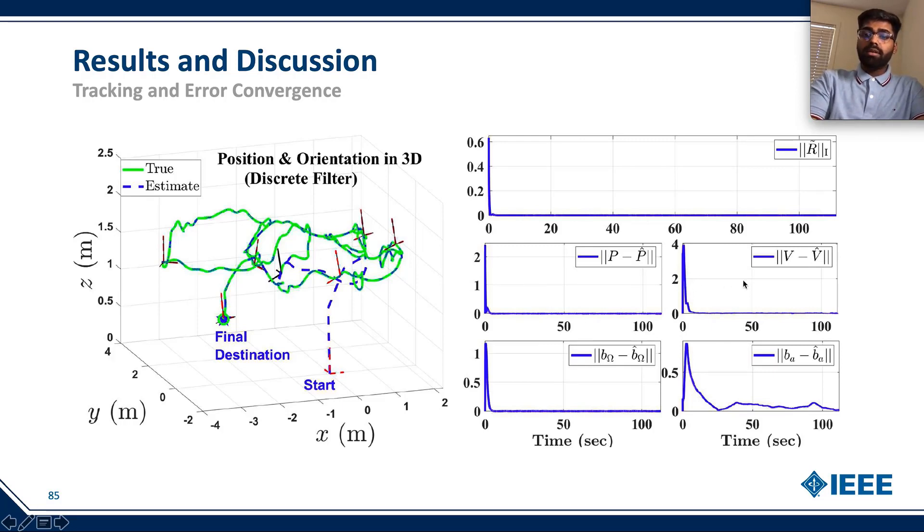This is made clear in the right portion of the figure where we can see the error in orientation, the error in position, the error in vehicle's linear velocity. Along with this, we have the error in bias for both the angular velocity as well as the accelerometer bias. We can conclude here that the error converges very close to zero.